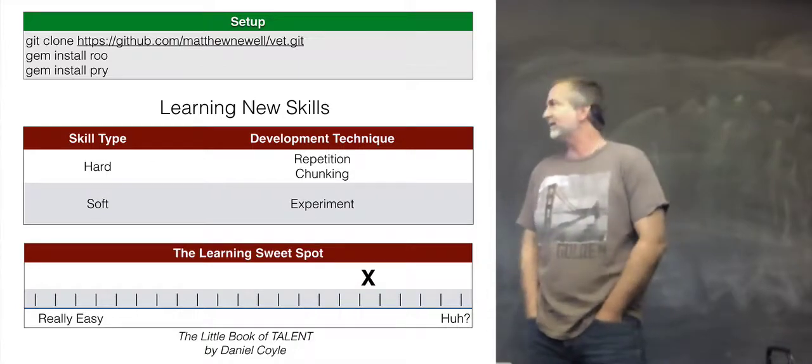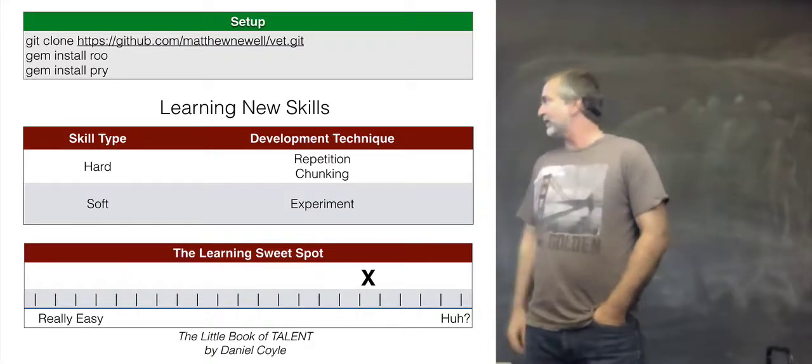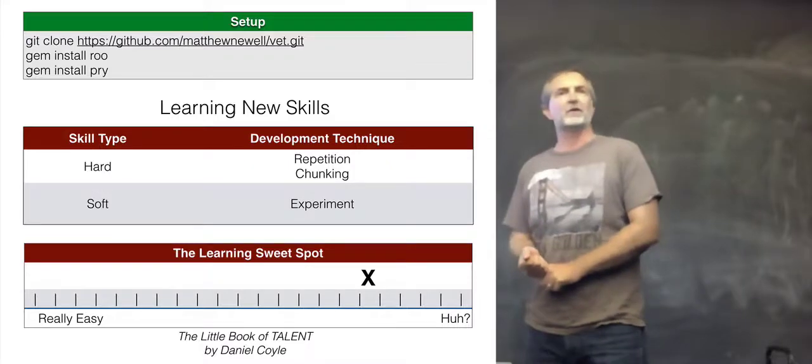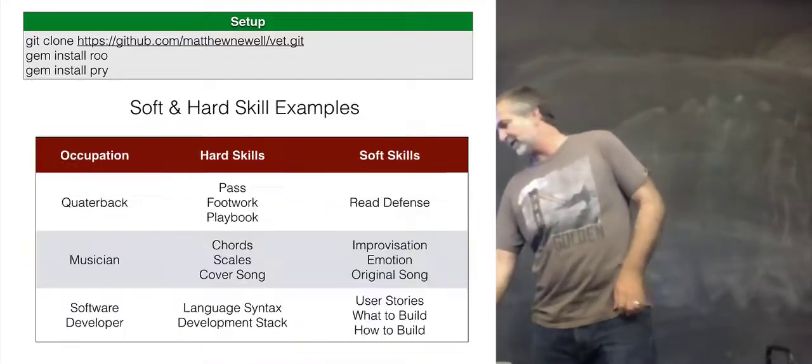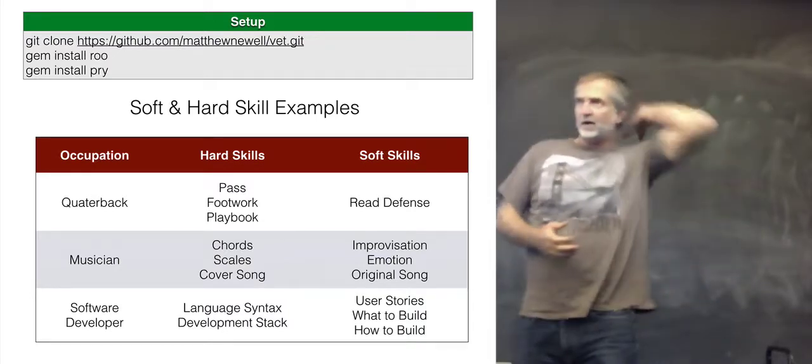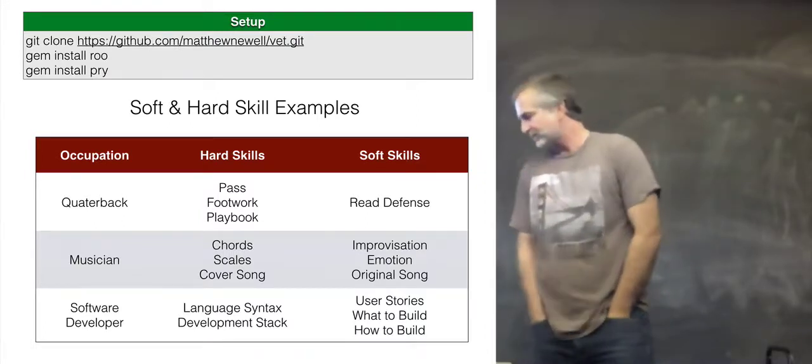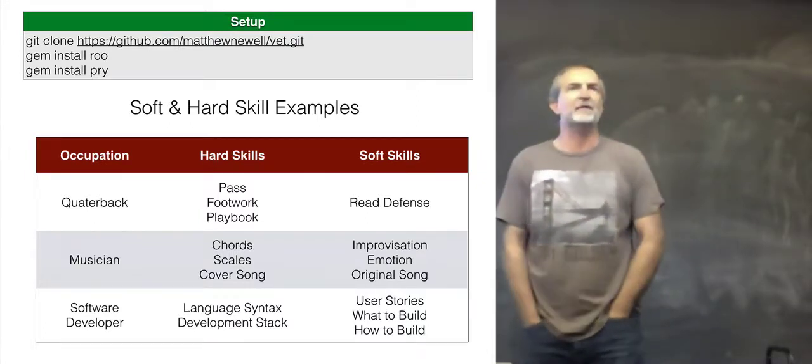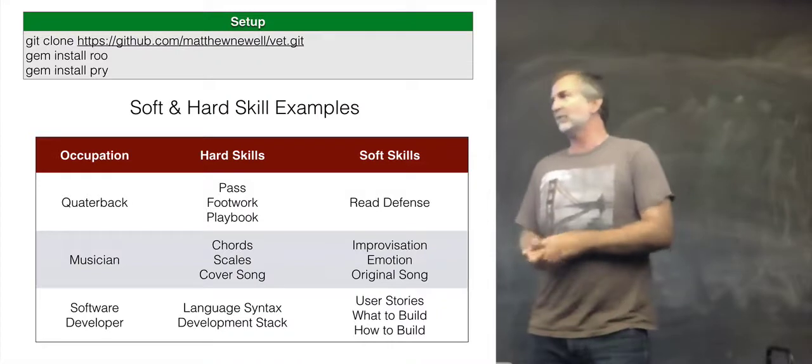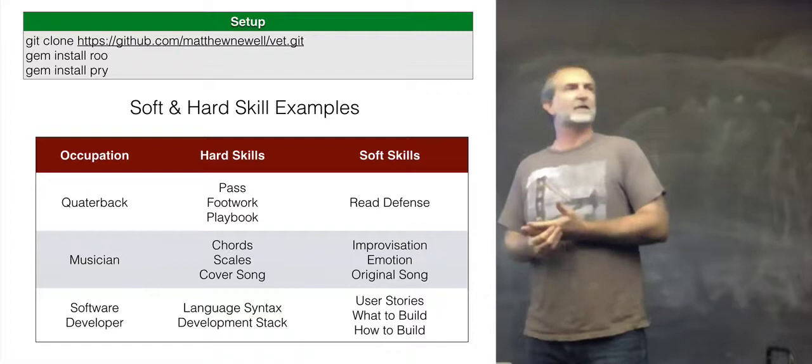Soft skills are really experimentation and public seeking. You want what's called the learning sweet spot. You don't want it to be so hard that you leave the room, but you want it to hurt. You want to fail more often than you succeed. So if you're a quarterback, your hard skills are your pass mechanics, your footwork, learning a playbook. Your soft skills might be reading a defense.